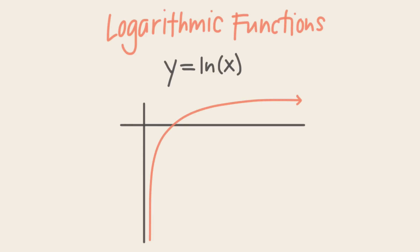In fact, there's another type of function that always has a vertical asymptote, and that is the logarithmic function.